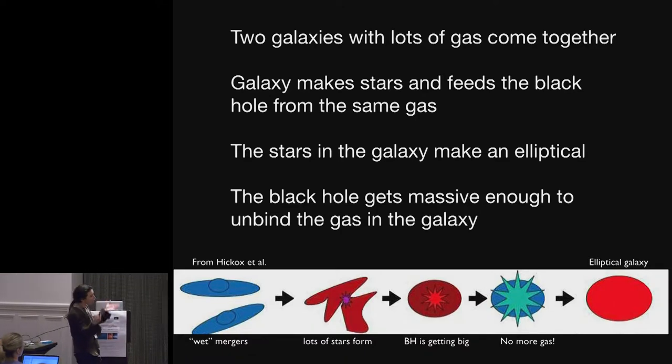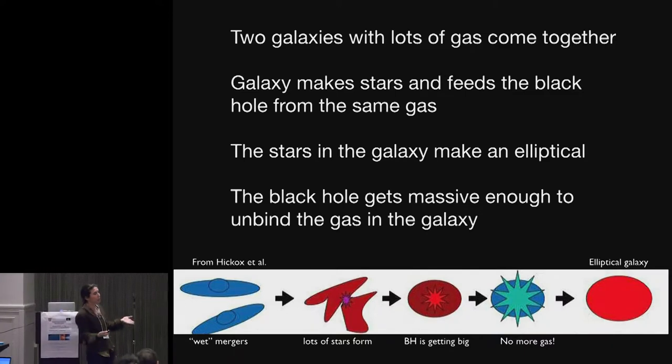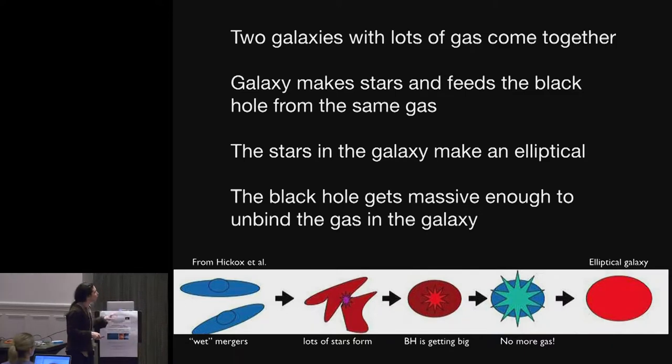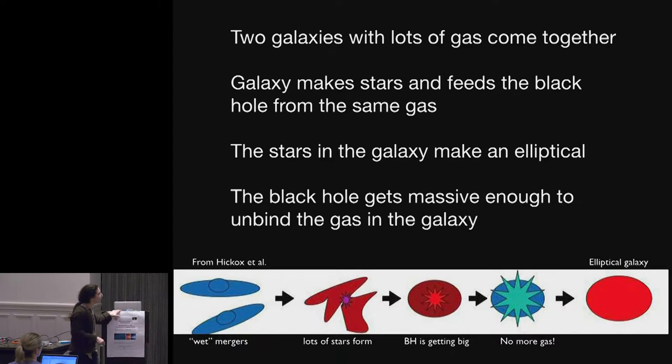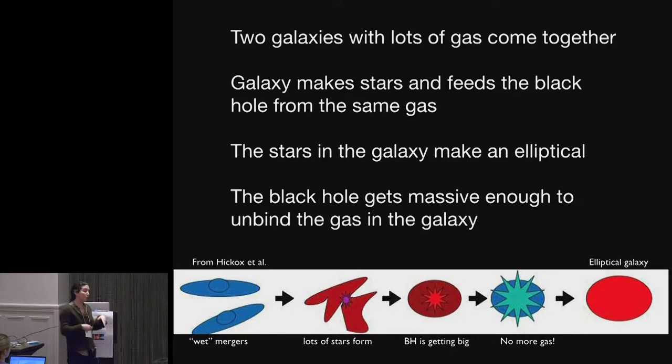The gas shocks and is funneled to the center. This is perhaps one of the most efficient ways of driving accretion onto supermassive black holes. And as the black hole grows.